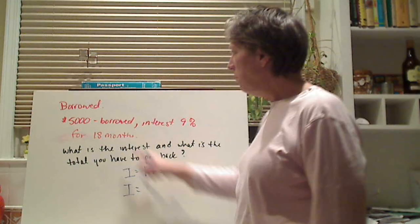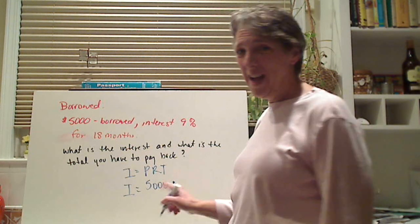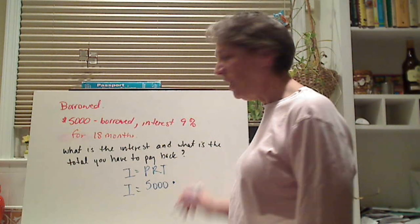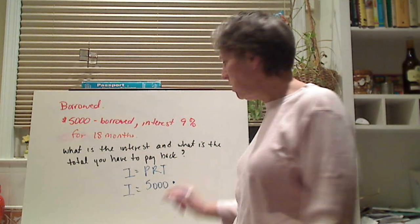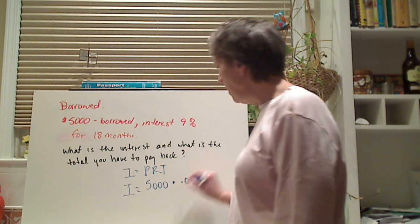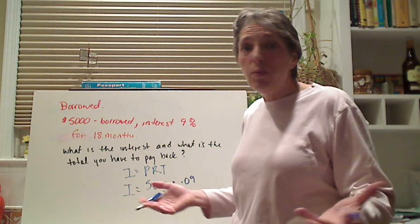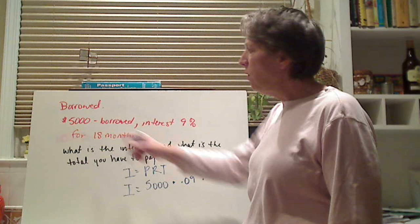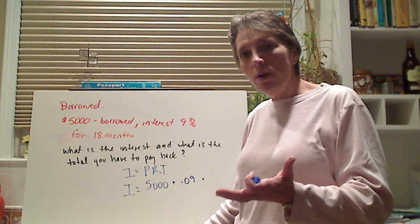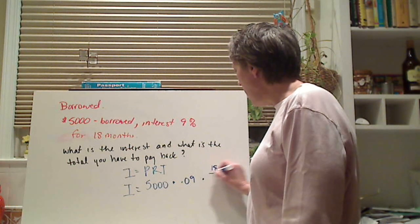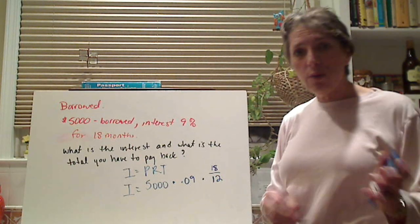Then I write I equals, the principal is $5,000. I put a dot and not an X, so it's less confusing. The interest is 9%. What do I have to change the 9% to? Yes, a decimal. 0.09. I'm not going to put 0.090. It's just extra stuff that's there. I don't need it when I'm doing my work, only in final answers, for 18 months. Now, what did I tell you about 18 months? I write it over 12. Now, I can simplify it, or I can leave it like that, because the calculator is going to do the work for me.